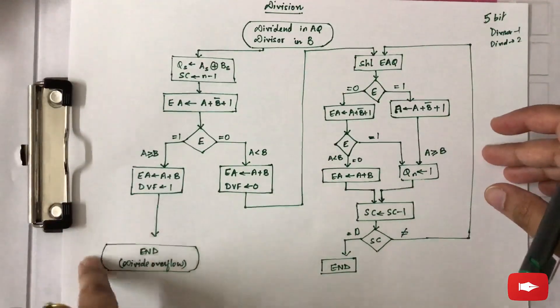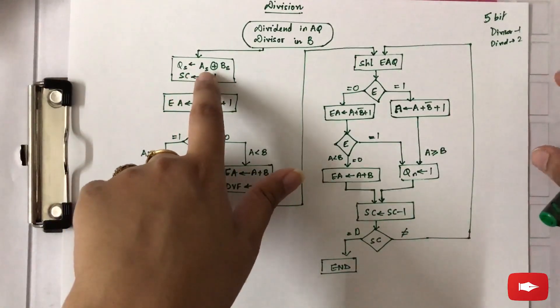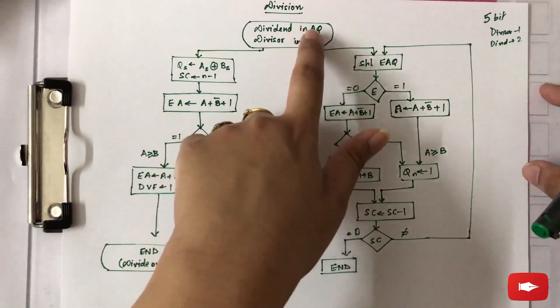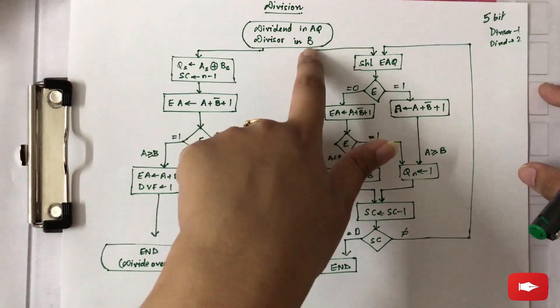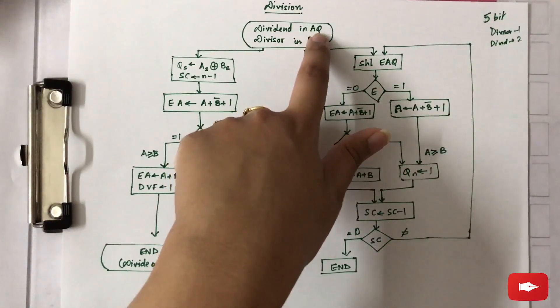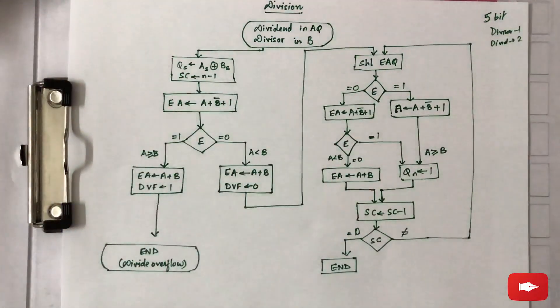So this is the flowchart to perform the division. Firstly, the dividend is stored in AQ and divisor in B, where B is one register and dividend is stored in two registers. Now when the sign of the quotient is to be determined, you need to know the sign of the dividend and the divisor.